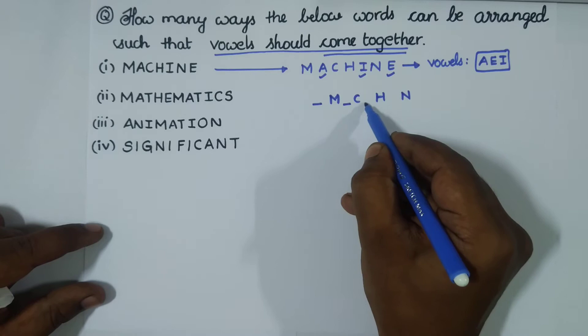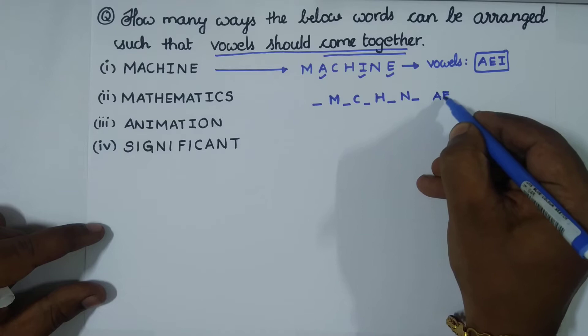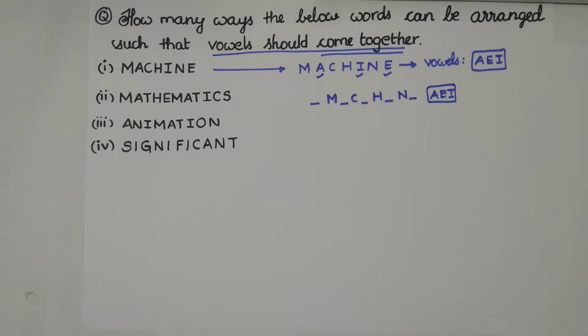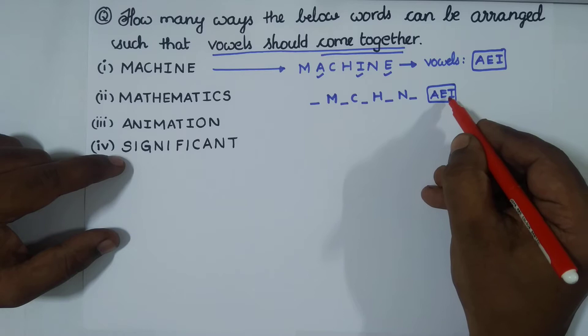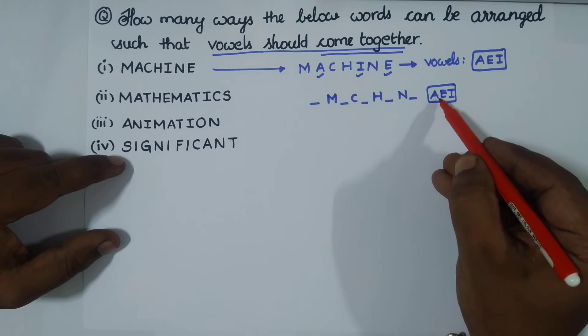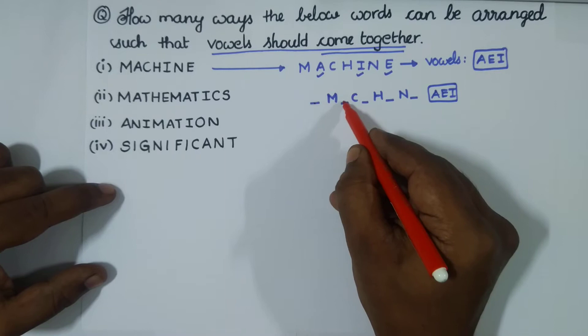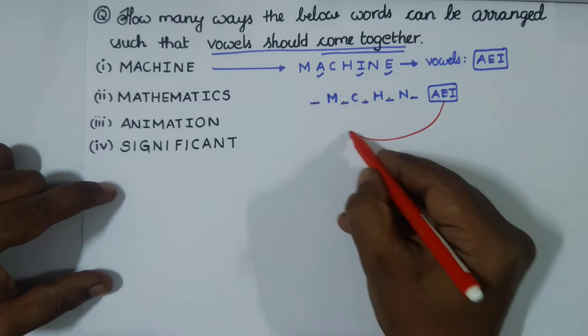So let's give five blanks here: one, two, three, four, five. Now you have the vowel group A, E, I — put them at one end. Since vowels should come together, we can put A, E, I here, or here, or here, or here, or here. So the vowel group A, E, I can go into any of these five blanks.